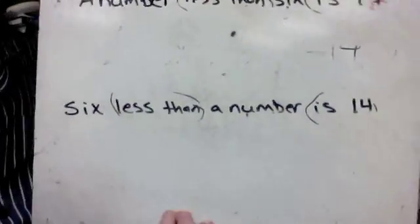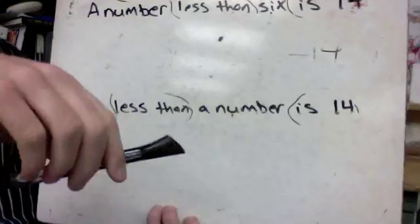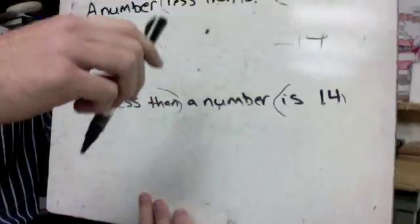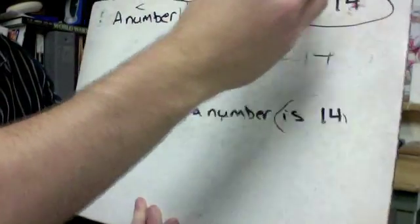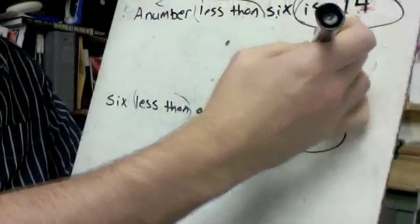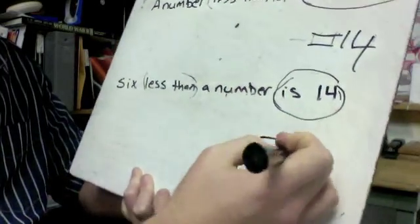We have a couple phrases here that are very similar. A number less than six is 14. Six less than a number is 14. So let's start by identifying some certain parts of this phrase. We've got is 14's on both of them. Is means equal. So we've got is 14 equals 14 equals 14.